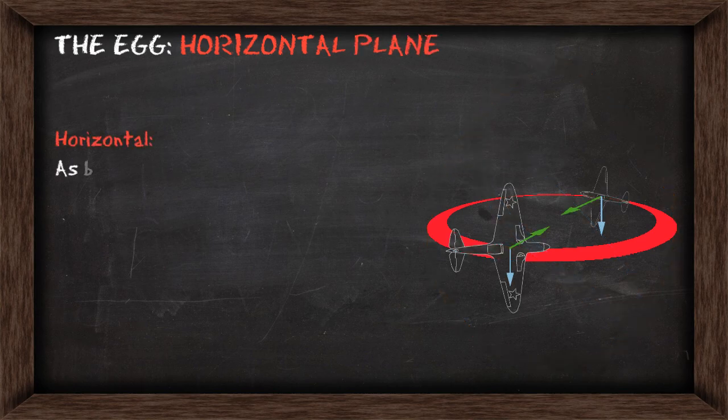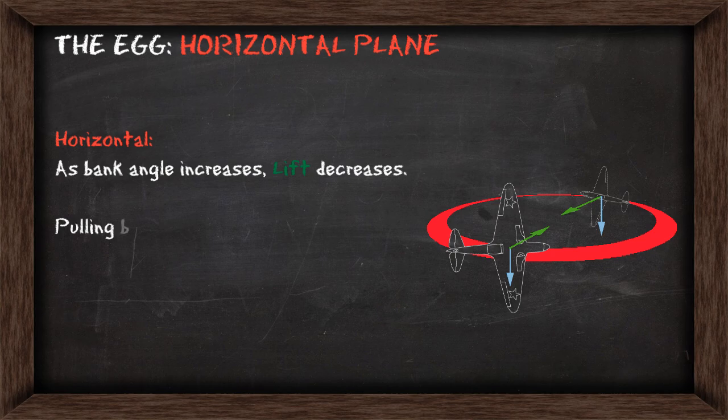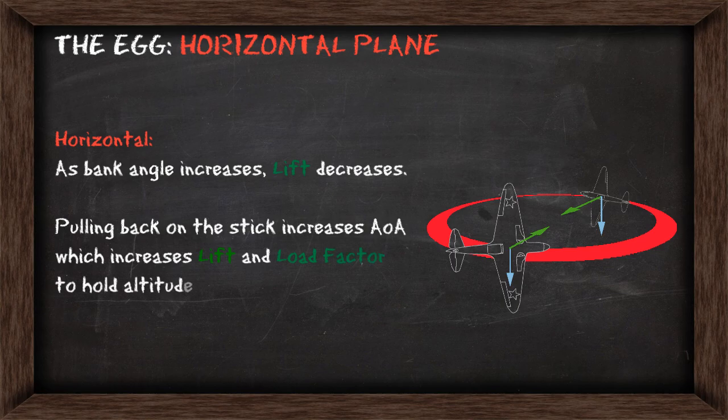When we initiate a turn, as bank angle increases, your lift decreases. So naturally we pull back on the stick, and this increases our angle of attack, which will in turn increase lift and the load factor, and helps us hold altitude. This gives the effect of increased turn performance.